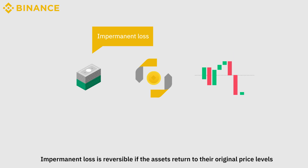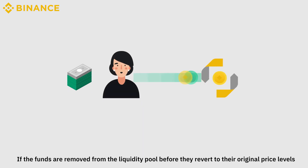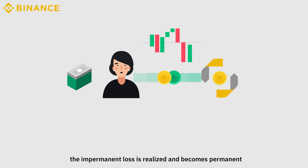Impermanent loss is reversible if the assets return to the original price levels. If the funds are removed from the liquidity pool before they revert to their original price levels, the impermanent loss is realized and becomes permanent.